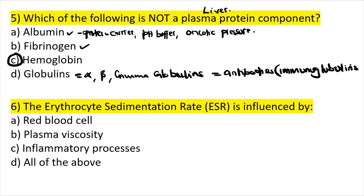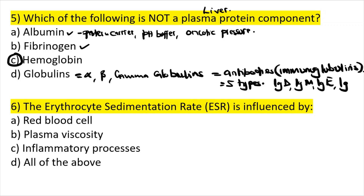There are five types of immunoglobulins that you need to know: immunoglobulin D, immunoglobulin M, immunoglobulin E, immunoglobulin A, and immunoglobulin G. You are also supposed to know where each is most abundant.